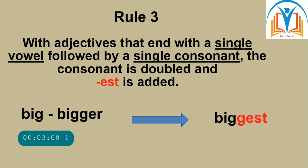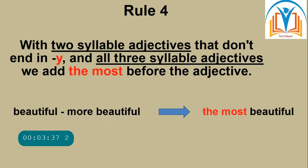Rule three: with adjectives that end with a single vowel followed by a single consonant, the consonant is doubled and -est is added. Look at the example: big, bigger, biggest. One -g is doubled, giving us big, bigger, and biggest.